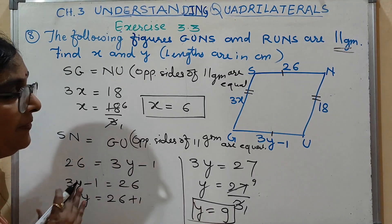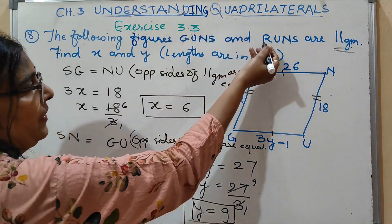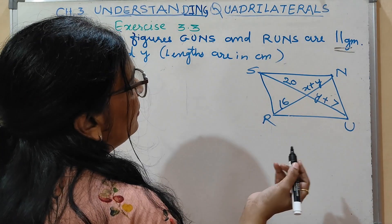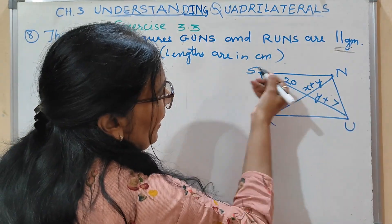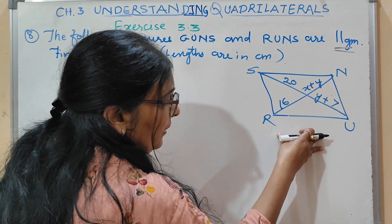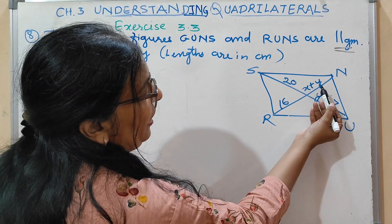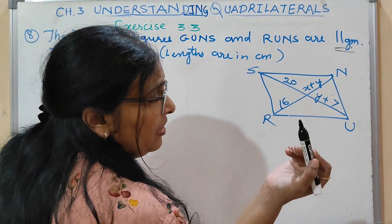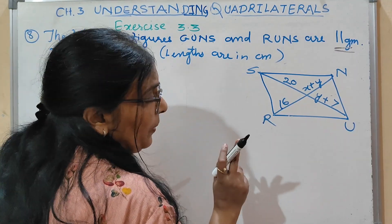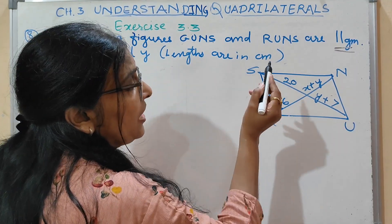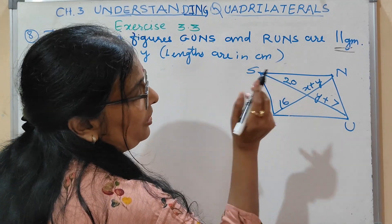So you got the values of X and Y. Now move to the next figure. In this figure, R, U, N, S is a parallelogram, and here the diagonals are given. You need to find X and Y. So you have studied another property: diagonals of a parallelogram bisect each other.